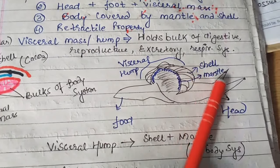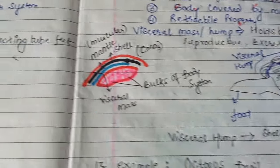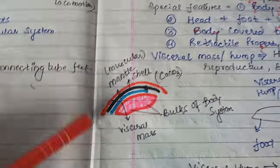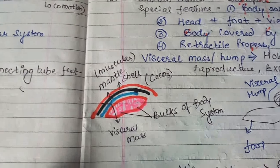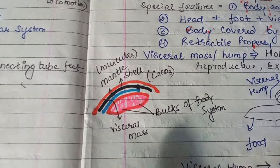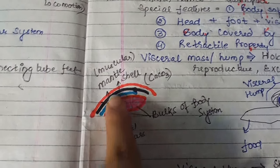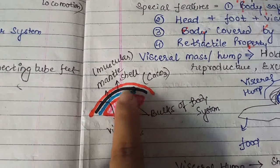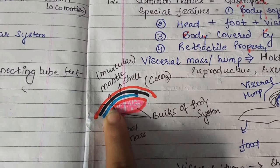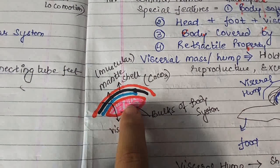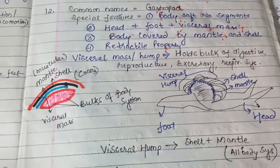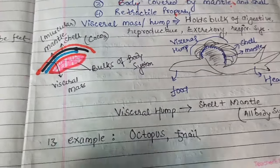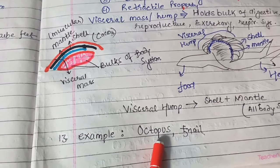You can see the arrangement in this colorful figure. The red portion is combinedly called the visceral mass. The black portion is the shell body part. The blue portion is the mantle part. The inner region is the bulk of body systems. Examples include octopus and snails as the most common examples of phylum Mollusca.